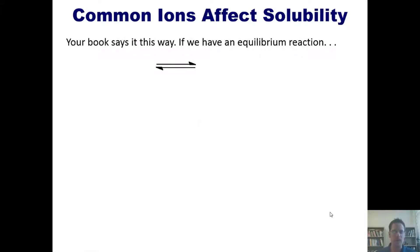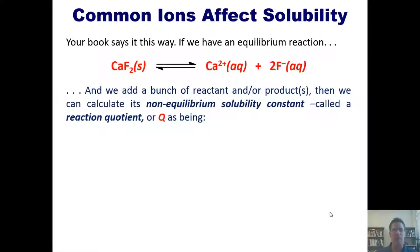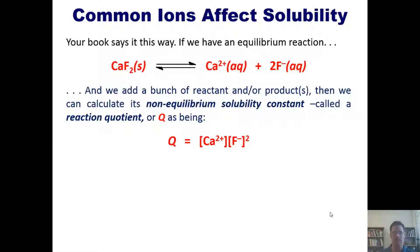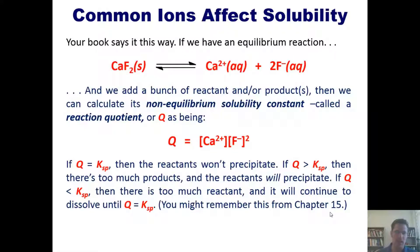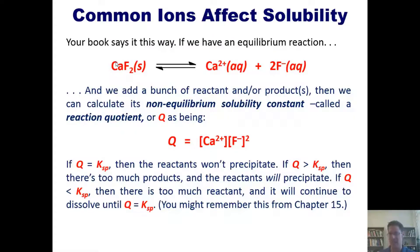If we have an equilibrium and add reactants and/or products, we can calculate a non-equilibrium solubility constant called the reaction quotient, Q. If Q equals Ksp, your reactants won't precipitate — you're right at the sweet spot. If Q is larger than Ksp, there are too many products and the equilibrium shifts left, meaning the reactant will precipitate out. If Q is less than Ksp, there is too much reactant and it will continue to dissolve until Q reaches Ksp — something you may remember from Chapter 15.